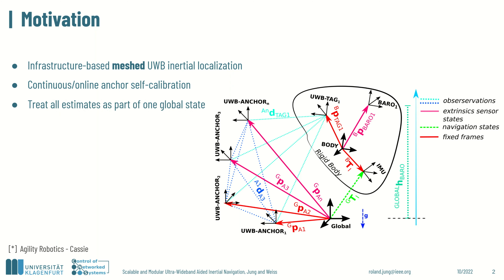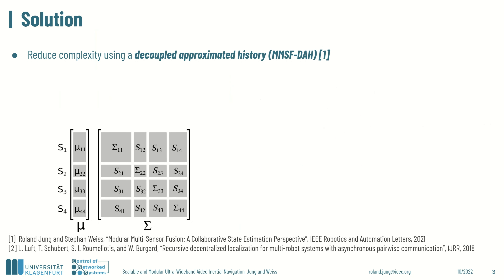Since all estimated states needed to be treated as part of the system's global full state, problems regarding the computational complexity arise. To reduce the computational complexity, we apply our decoupled approximated history approach.